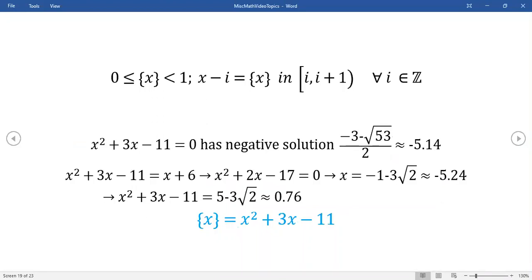So I just rewrote here's the original equation. We're trying to solve this equation for negative solutions and we're going to use this definition right here. Now a way to get started here is to actually just solve this equation x squared plus 3x minus 11. The negative solution turns out to be this value right here right around minus 5.14.